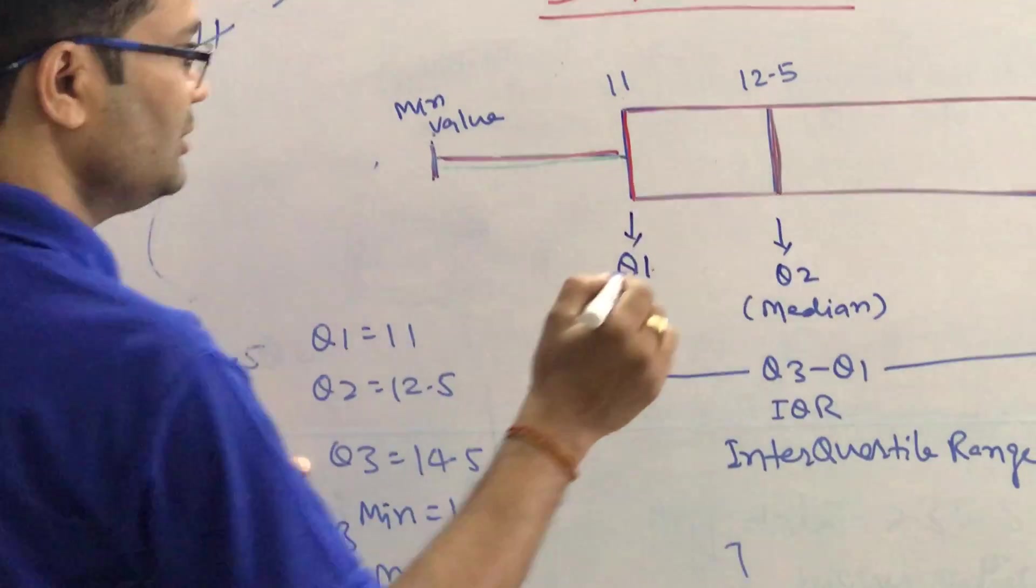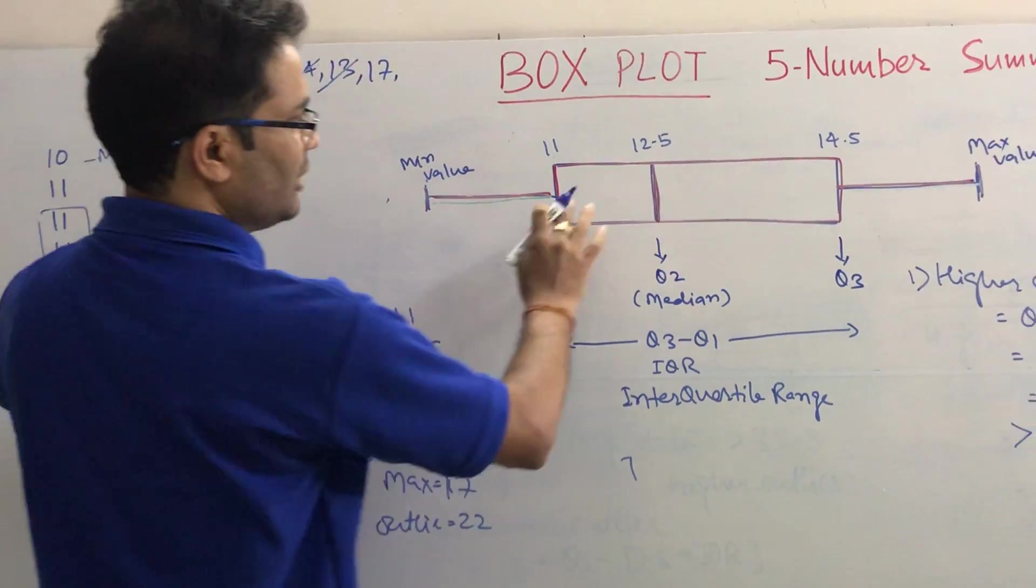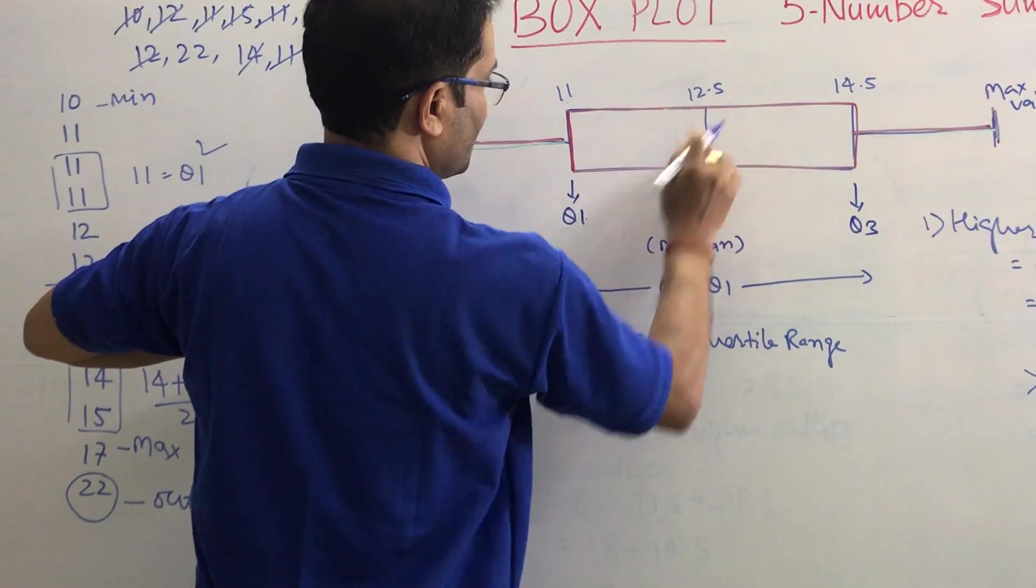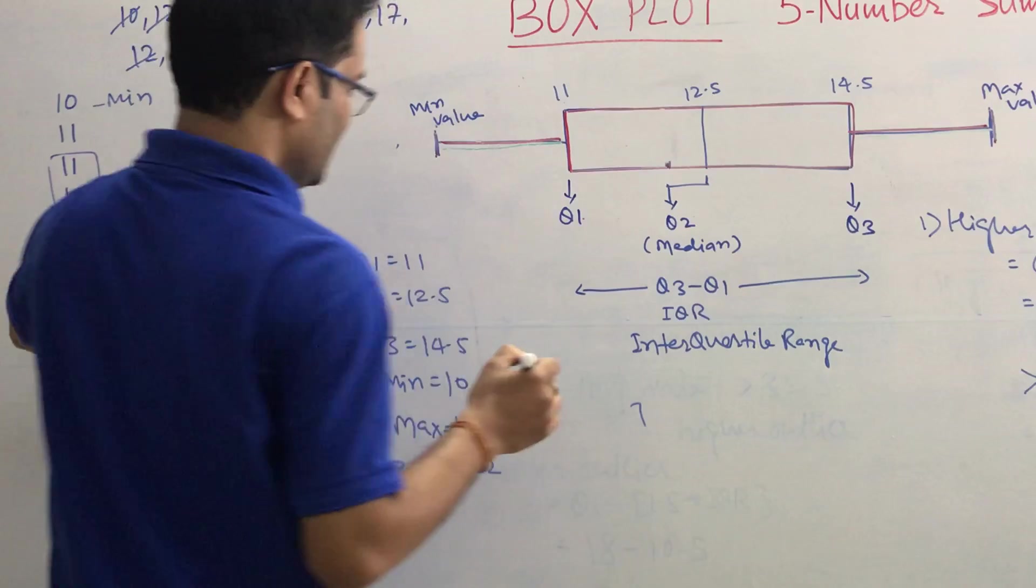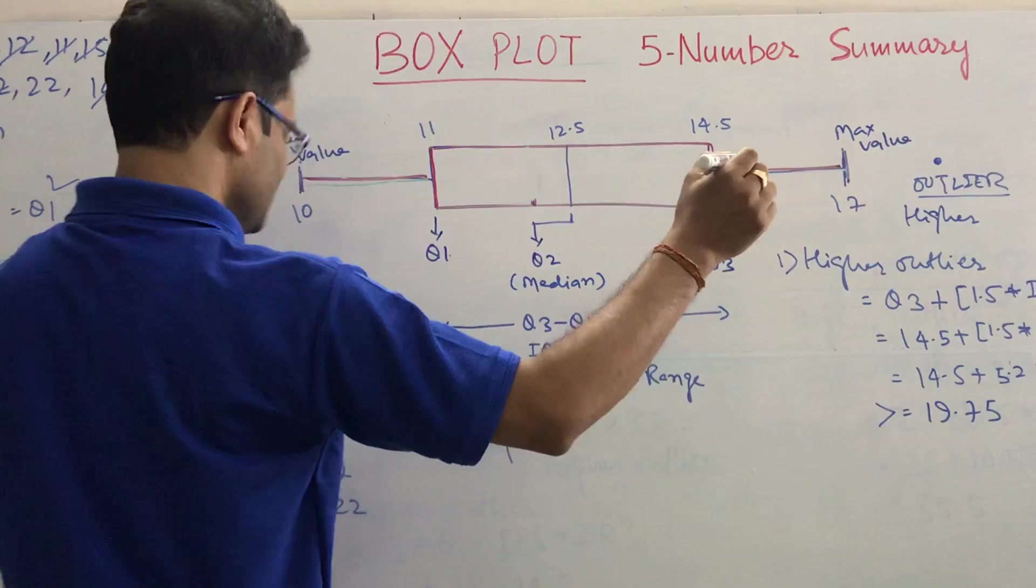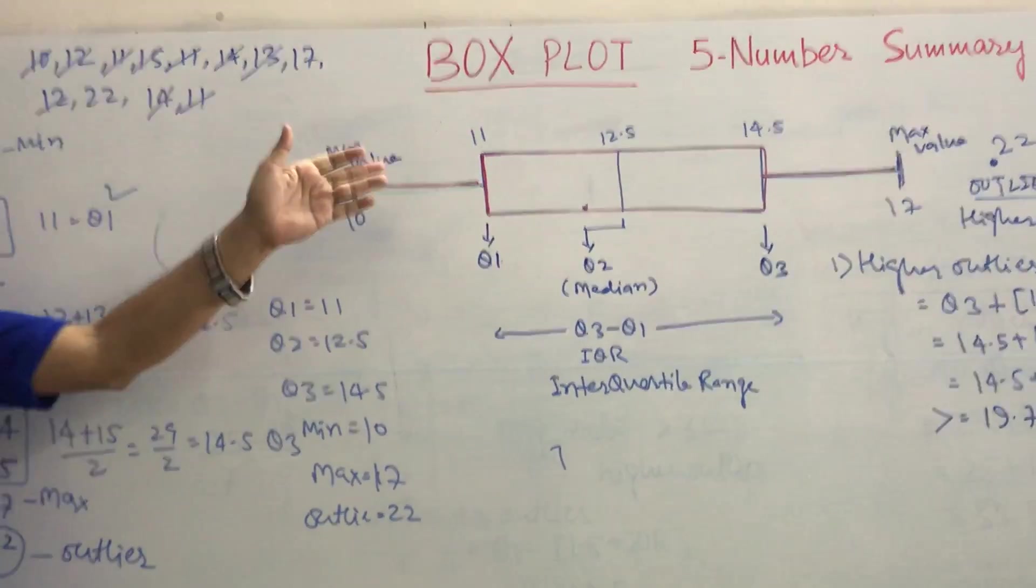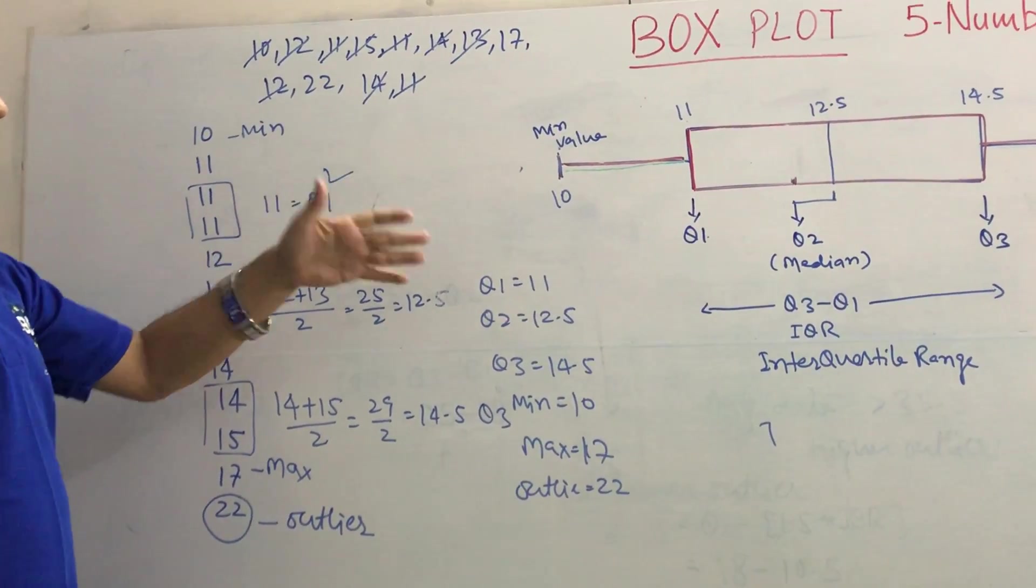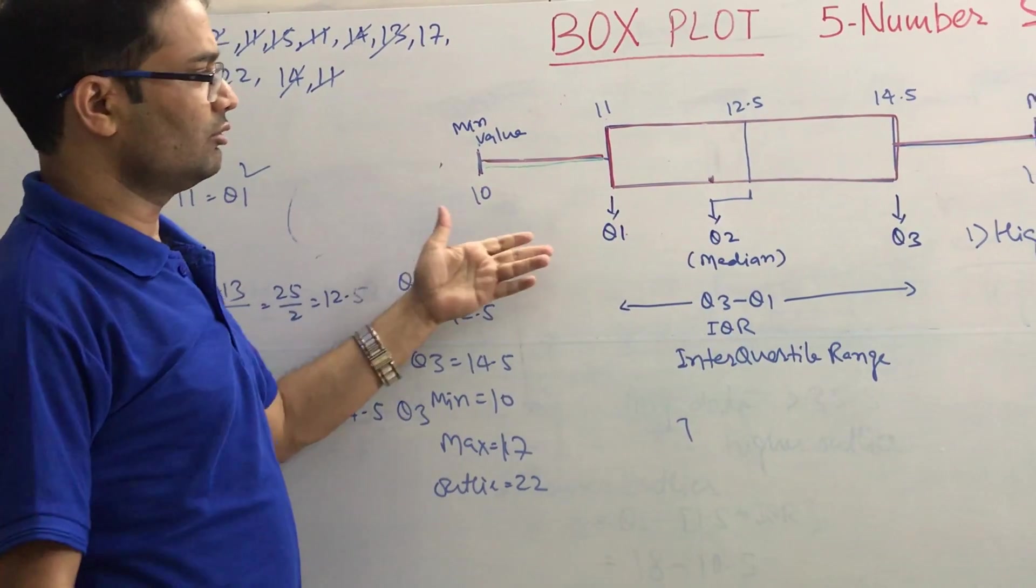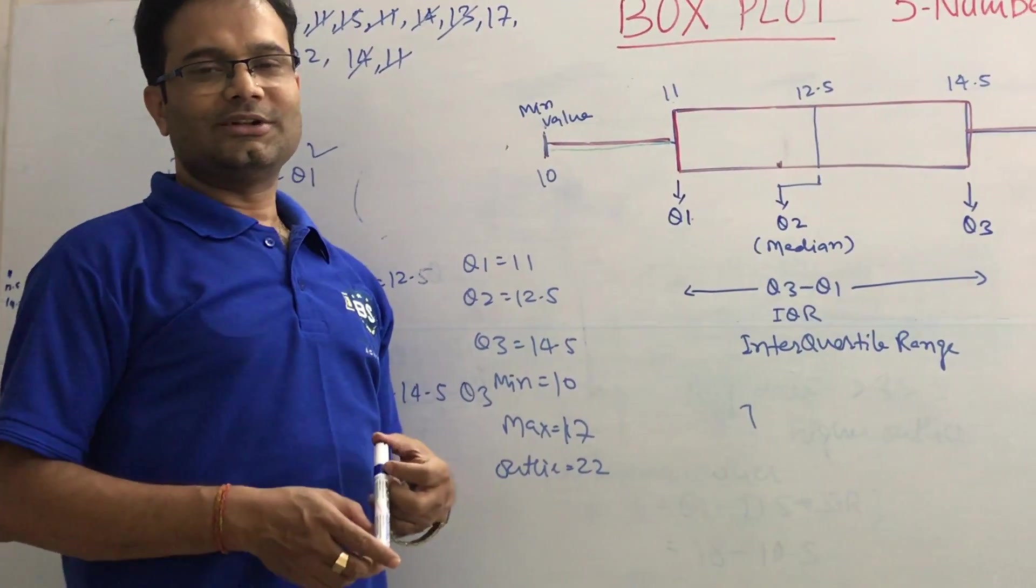Actually, just move this part here a little bit because it's not perfectly aligned. Then min is 10, max is 17, and outlier is 22. So this is the box plot of your given data. You can do some more examples where you don't have the outlier or you have the outlier. You can practice, but this is the basic concept of how to create the box plot. Thank you very much.